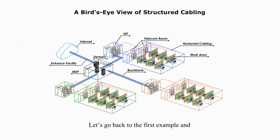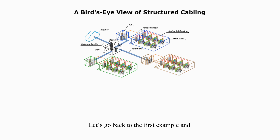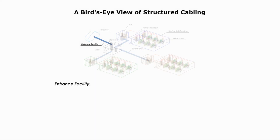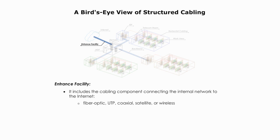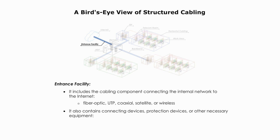Let's go back to the first example and use it to talk about each component. Let me start with entrance facility. Entrance facility includes the cabling components connecting the internal network to the Internet, such as fiber optic, UTP, coaxial cable, satellite, or wireless. Entrance facility also contains connecting devices, protection devices, or other necessary equipment, such as transceivers, multiplexers, and many others.